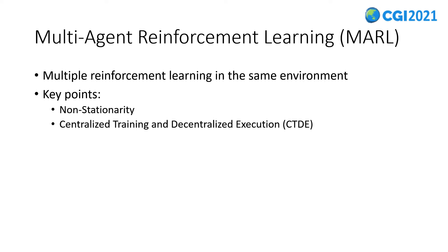Centralized training and decentralized execution architecture is an effective solution for dealing with the non-stationarity problem. Decentralized execution means the agent makes decisions normally by choosing actions based on their partial observations. The centralized training part means that at training time, the critics can have access to extra information which is not available at runtime — for example, the observations from other agents. This is usually possible for computer graphics applications, and I'll introduce some algorithms with this setup later.